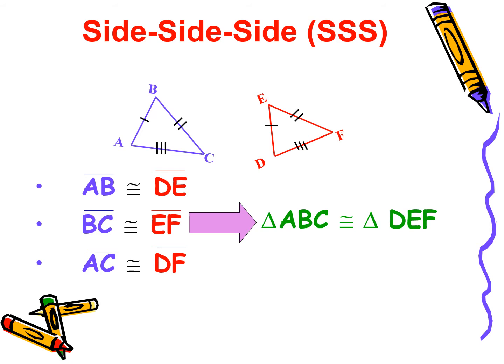There are four major criteria to prove the congruence of a triangle. The first one is Side-Side-Side (SSS). If the corresponding sides of a triangle are equal to the corresponding sides of another triangle — like AB is congruent to DE, BC is congruent to EF, and AC is congruent to DF — then it is enough to prove that the two triangles are congruent. That means triangle ABC is congruent to triangle DEF, and the remaining angles — angle A congruent to angle D, angle C to angle F, angle B to angle E — follow by CPCT, meaning Corresponding Parts of Congruent Triangles.